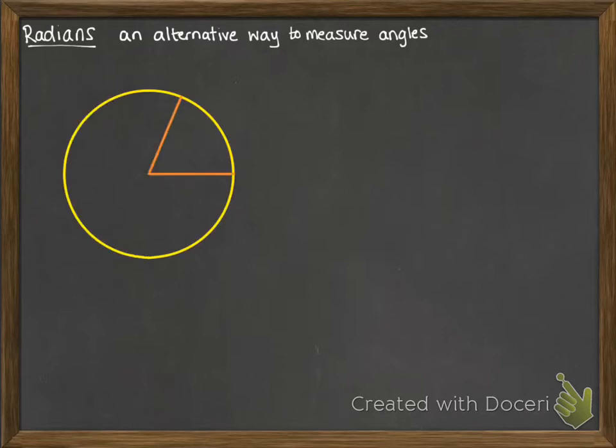Okay, today's lesson is on radians. Now this is an alternative way of measuring angles. You're used to measuring angles in degrees. This is another way that we can measure angles, and it's based around circles, which is why this particular unit is called circular measure.